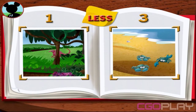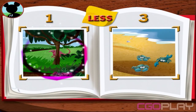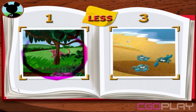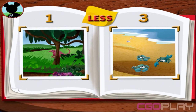Draw a circle around the group that shows less animals than the other. There are less anteaters than crabs. Way to go, Hot Dog! I got pictures of some pretty amazing groups of animals.